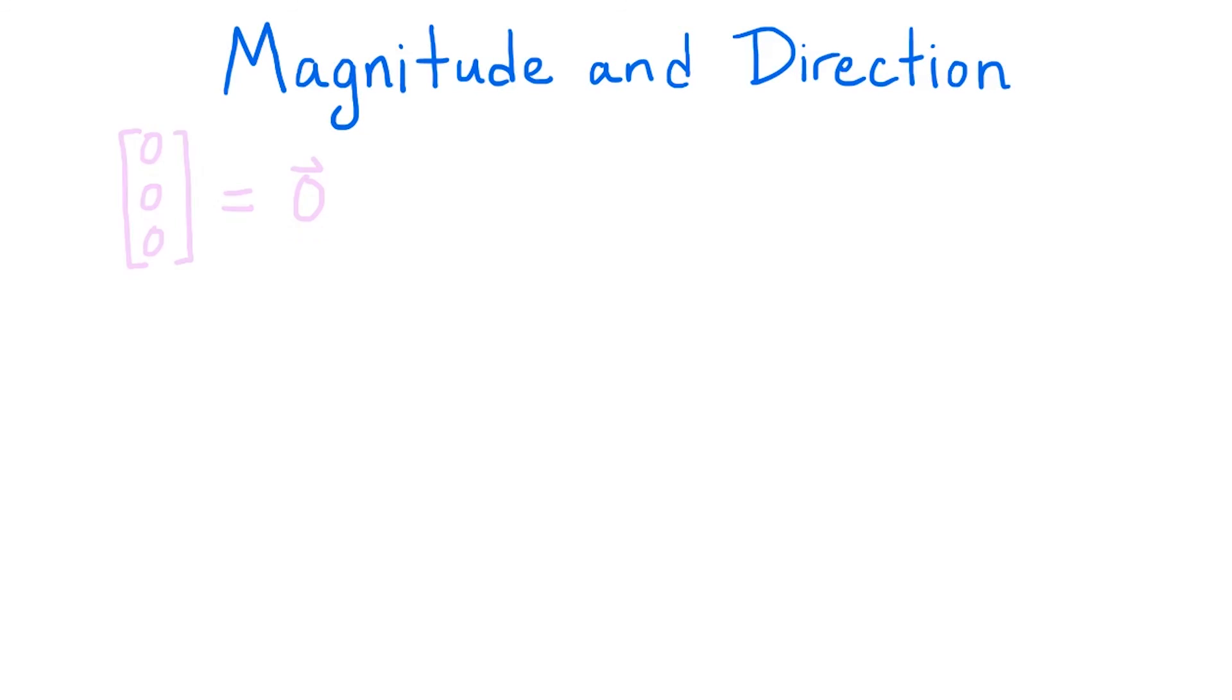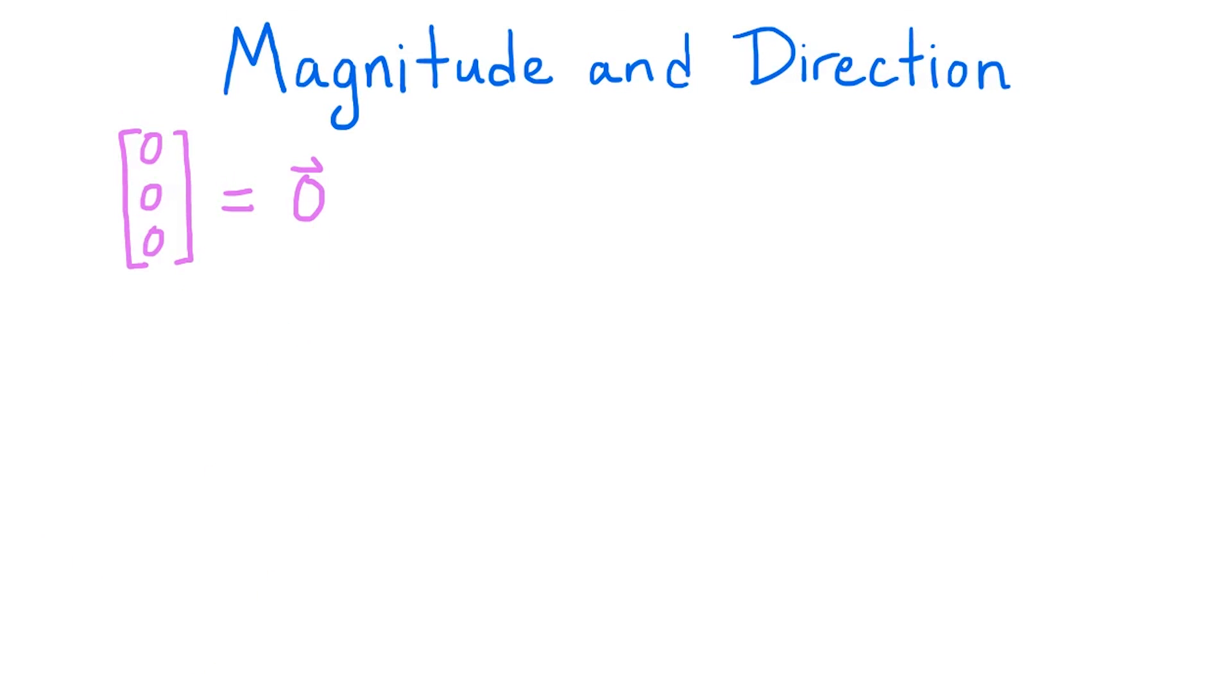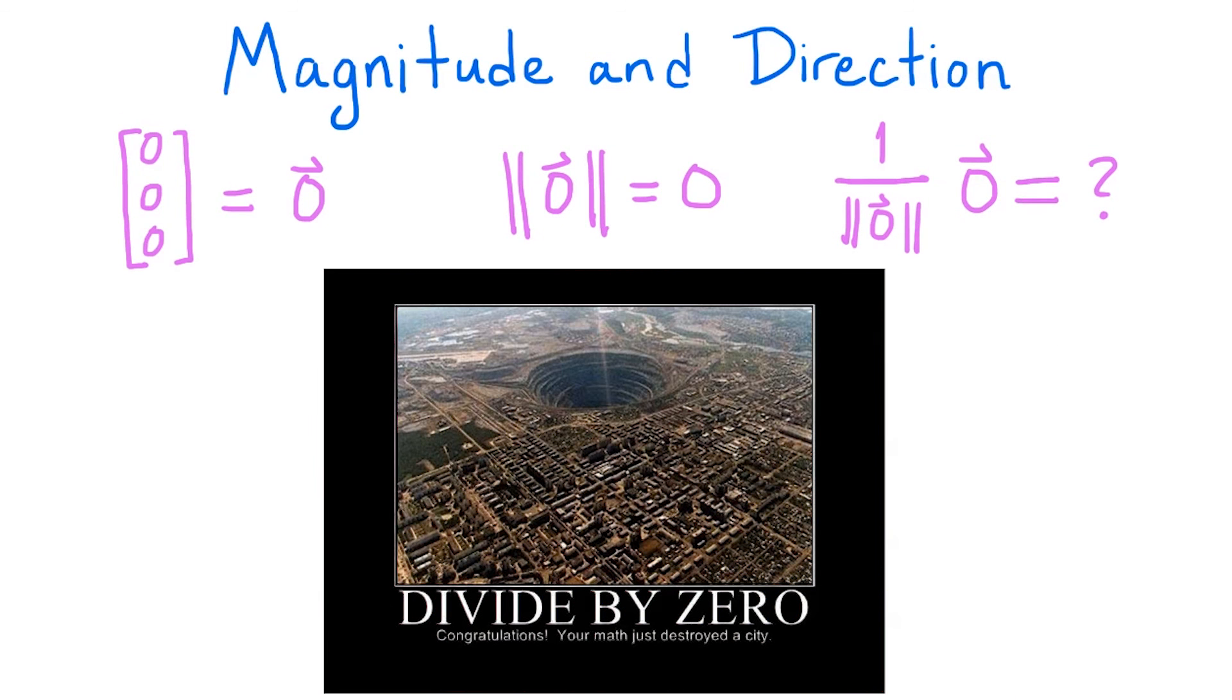I should note one last point. If all the coordinates of a vector are 0, we call that vector the 0 vector, denoted as the number 0 with an arrow above it. The 0 vector is a vector indicating no change. Note that the magnitude of the 0 vector is 0. However, what happens if we try to normalize the 0 vector? We would end up dividing by a magnitude of 0, which causes all sorts of problems. So we simply say that the 0 vector has no normalization. Another way to interpret this is that the 0 vector has no direction, just as it doesn't make sense to ask which way a stationary car is moving.